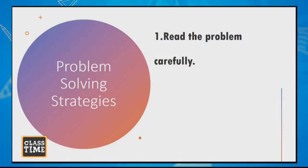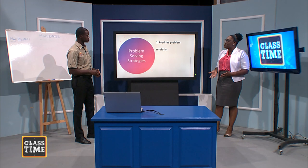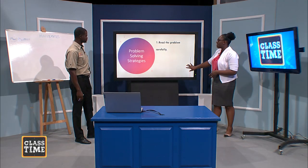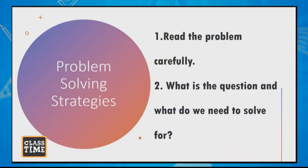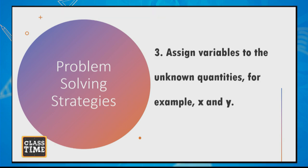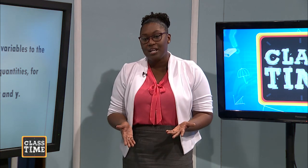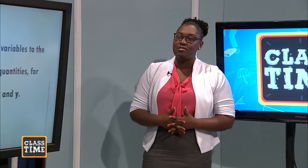So the first one is obvious — you have to read the problem carefully. Why is that so important? Because there are times when there are hints in there that you need to pick up. You need to figure out what type of math you're going to use. You need to really understand the question. How are you going to understand it? Read it carefully. What is the question and what do we need to solve for? Because if you're going to actually solve a question, you need to know what are they really asking me to do. Assign variables to unknown quantities, for example X and Y, so that you can then manipulate them later on when you go to solve the question.